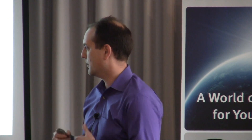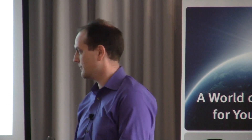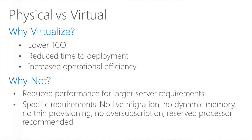When we start talking about audio, video, and real-time communication workloads, keep in mind these are very large servers. Microsoft recommends 32 gigs of RAM and 8 to 12 cores. Because there is real-time audio flowing through it, we can't have any performance hit. What's not supported in virtualization environments: no live migration, no dynamic memory, no thin provisioning, no over-subscription of your host. We have to have a one-to-one core layout, and reserved processors are recommended.